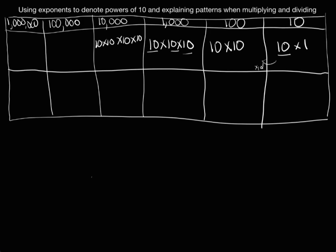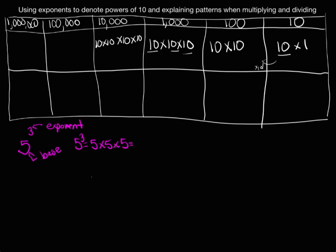Let's talk about what an exponent is, using an example where 10 is not the base. Take 5 to the third power: the 5 is called the base — the number we're going to be multiplying. The exponent, the 3 raised at the top, refers to the number of times we multiply our base. So 5 to the third power, or 5 cubed, equals 5 times 5 times 5, which is 25 times 5, giving us 125. When we use exponents, we're doing repeated multiplication.